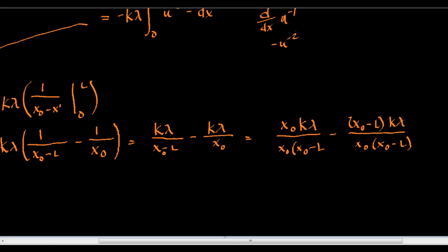And, then, if we distribute the k lambda on this side in, we're going to get x naught k lambda of x naught times x naught minus l minus k lambda x naught minus k lambda l over x naught x naught minus l.